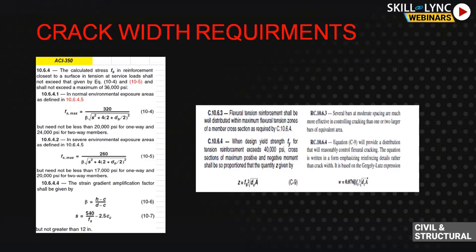ACI 350-06 wants to limit severe exposure differently from normal environmental exposure. It is limiting two things: allowable stress and your steel reinforcement. If you see section 10.6.4.1, this equation calculates allowable stress for normal exposure; 10.5 is for severe exposure. It depends on how much sulfate is attacking your structure from soil and water, and what the pH value of the liquid your structure is carrying. There is another equation in ACI 350 that tells you how to calculate a durability factor to impose strength and cracking limits.